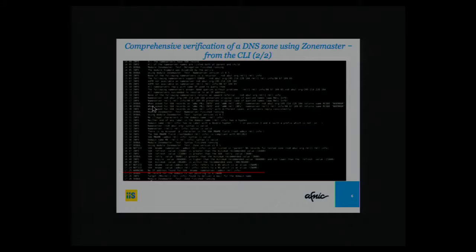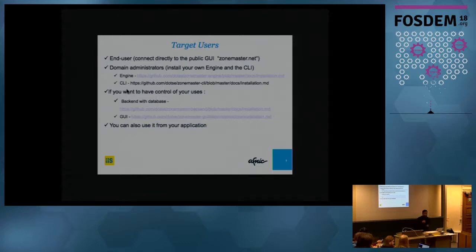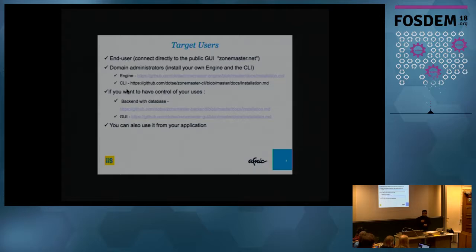There are a number of tools out there — open source, paid, and everything — so why is ZoneMaster different? ZoneMaster targets different types of people. If you are just a user and you want to check your website, you go to the SaaS public GUI at zonemaster.net, enter your domain name, and see whether your zone is healthy. For advanced users, you can install the engine — which is the Perl library — and use the command line interface, with various customizations to see how your zone or domain is working.